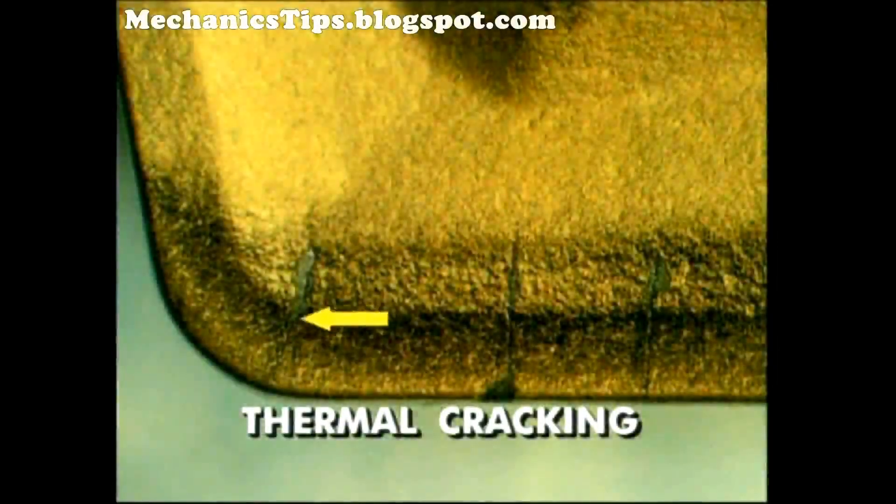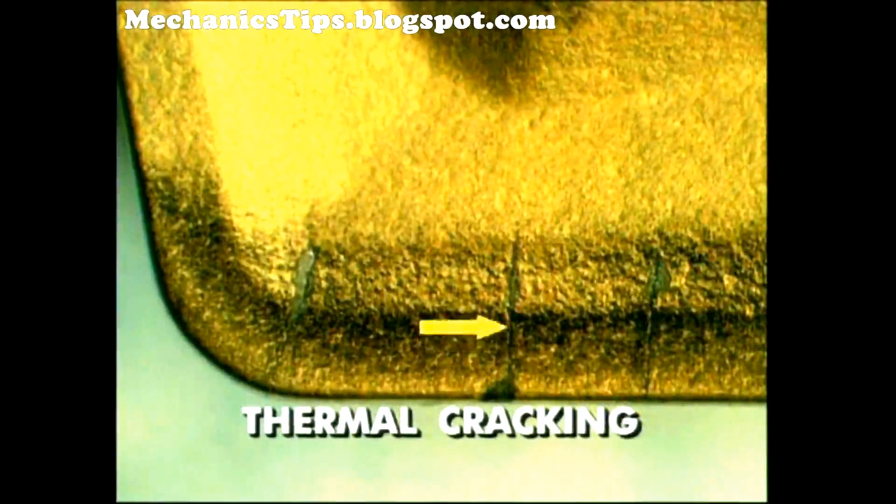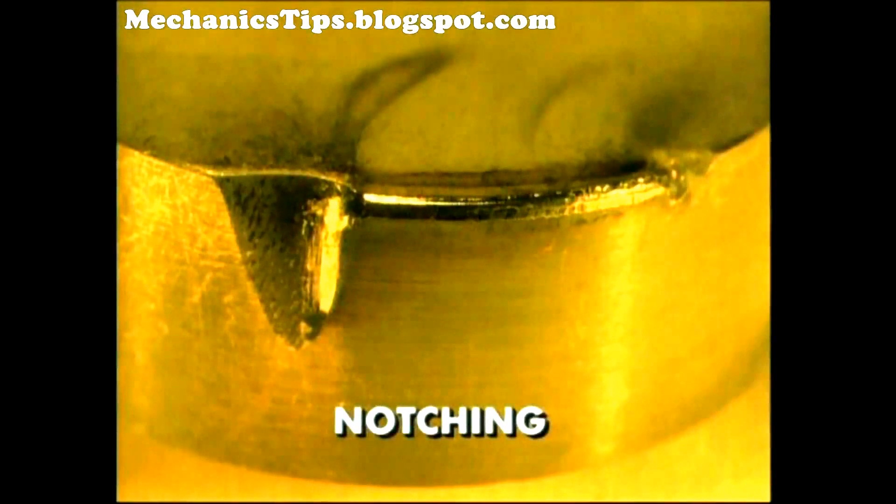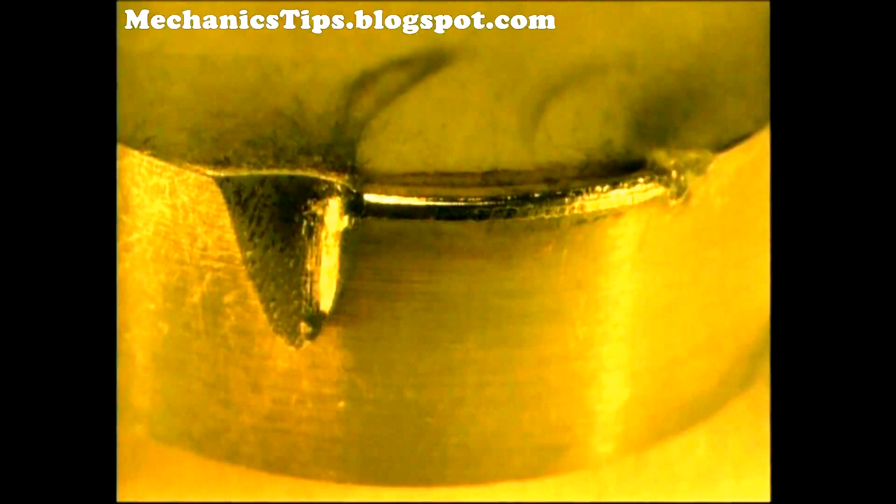Thermal cracking occurs when inserts go through a rapid heat-cool cycle, such as in either interrupted cutting or when the coolant is improperly applied, suddenly cooling a hot insert. A notch at the depth of cut line may occur in machining high-temperature alloys or with any very hard outer layer, such as in a casting or forging. This is caused by the pullout of small particles of tool material at the flank, face, and cutting edge by the pressure welding of work material to the tool material. An edge preparation on the insert and an increased lead angle may decrease notching.